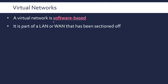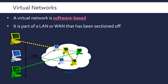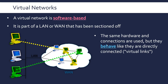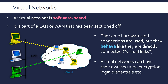A virtual network is like part of another network — a LAN or WAN — that's been sectioned off by software. So ignoring the colors here for a second, you've got a LAN here connected to a WAN, which could be the internet, and each color represents a virtual network — something that's been siphoned off or sectioned off. So we've got a green virtual network and one represented by yellow. The actual hardware layout and connections are the same, but they behave like they are directly connected via virtual links. The connection between the LAN and the WAN goes through a single point and through a few computers and routers, but they actually behave like they're directly connected.